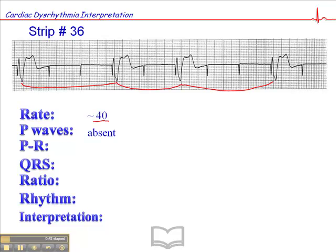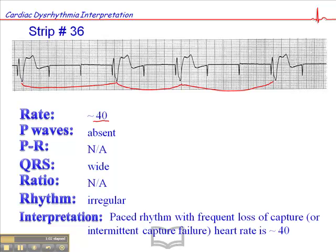We don't have P waves, and this is a single-chamber pacemaker, which is very, very common, where there are no P waves but there's a pacer spike followed by QRS. PR intervals are not applicable in this case. The QRS is always wide in paced rhythms. The ratio is not applicable. The rhythm is irregular. And in this case, we have a paced rhythm with frequent loss of capture, or intermittent capture failure, with a heart rate of 40.